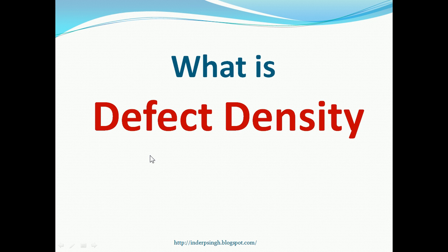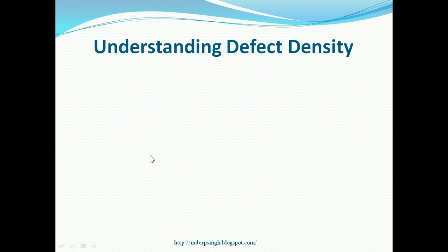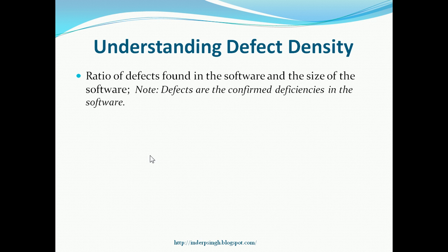Hello and welcome to this video on Defect Density. Let us understand Defect Density. It is the ratio of defects found in the software and the size of the software. Note that I say defects and not bugs. Defects are the confirmed deficiencies in the software.